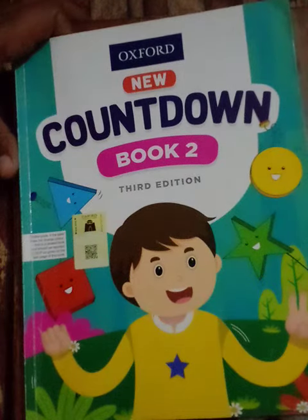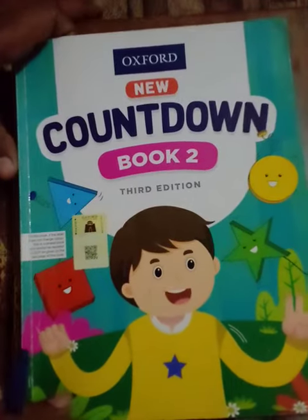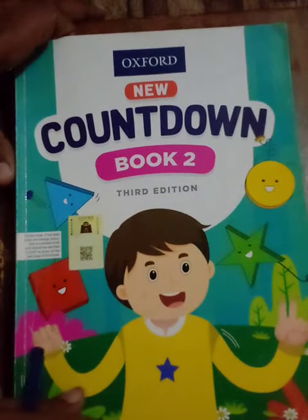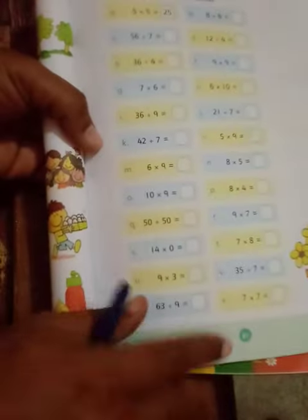Starting with the greatest name of Allah who is Rahman and Raheem. Today we are going to make the video of maths of class 2. That is about multiplication and division on page number 87.